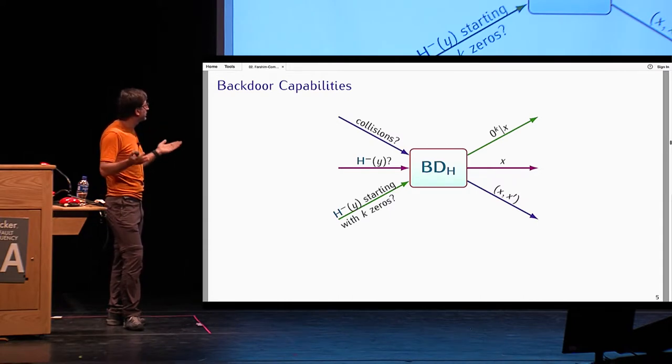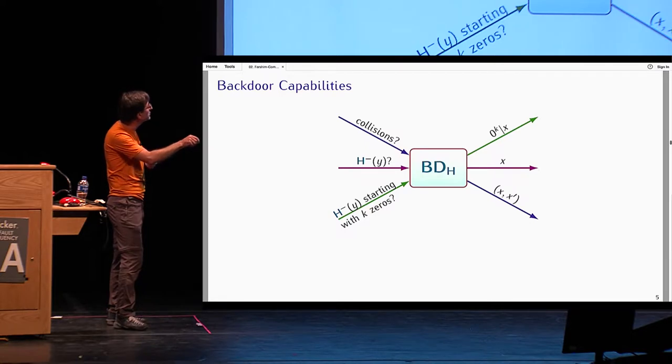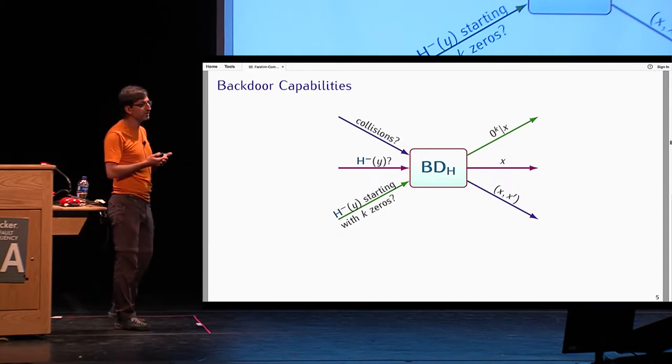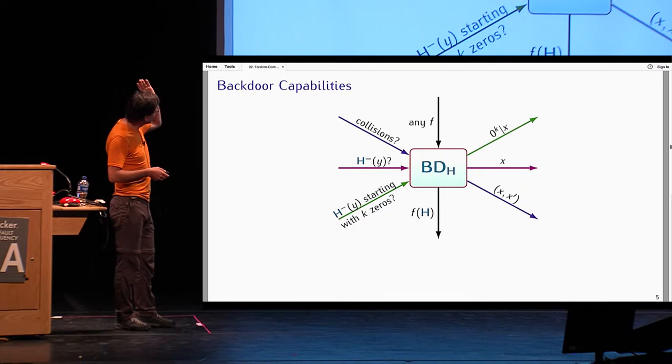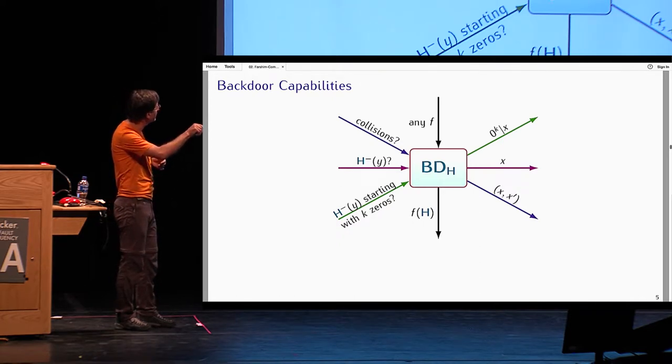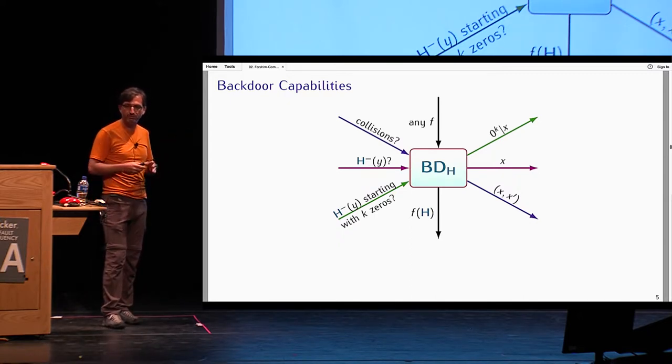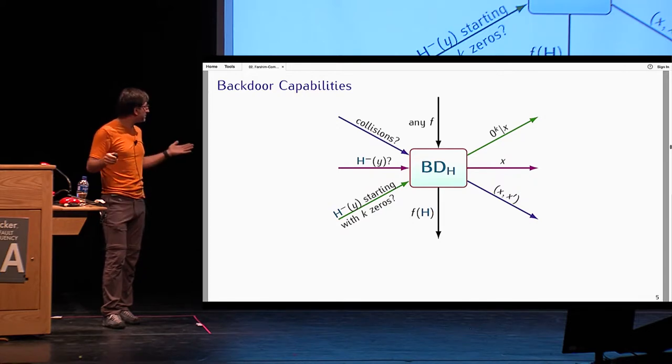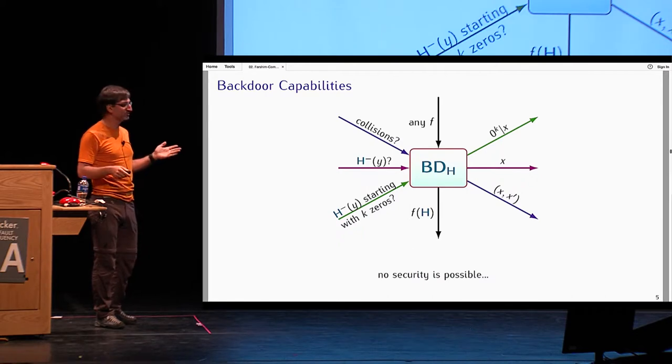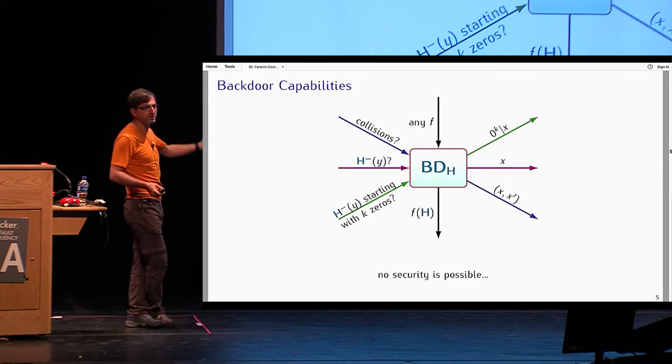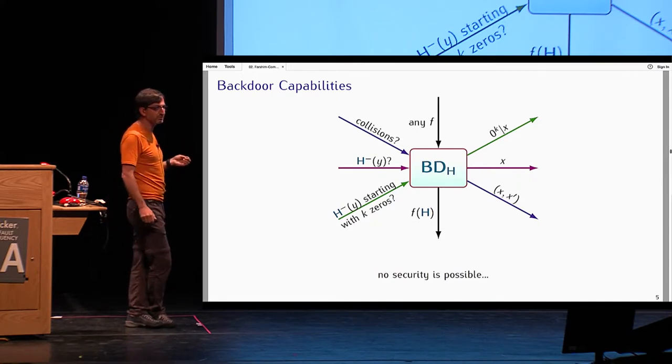I can do structured inversions. For example, I want to find preimages which start with a bunch of zeros. I can also do that. Being pessimistic cryptographers and conservative, we allow every function in a certain function class, arbitrary functions, to be queried to the backdoor oracle and get f of h. If you think about it for a minute, you will realize that no security is actually possible in this model if you're given one oracle, because whatever construction I have with oracle access to f, I can just query it on a function which searches for a preimage of this construction. No security is possible.